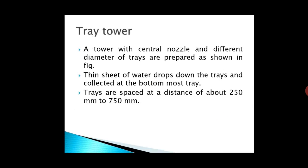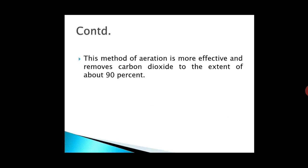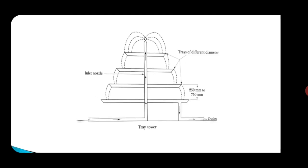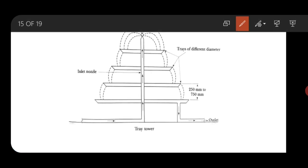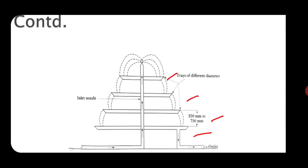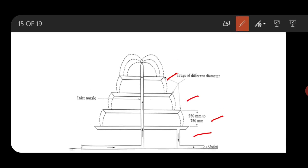Next method is tray tower. Tray tower consists of a central nozzle and different diameters of trays. Water will come out of the central nozzle and it will flow, it will drop down the trays and be collected at the bottommost tray.